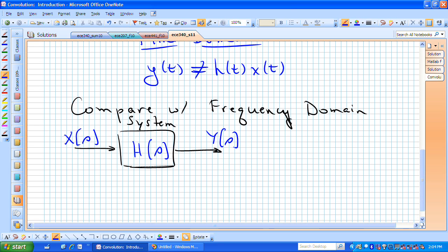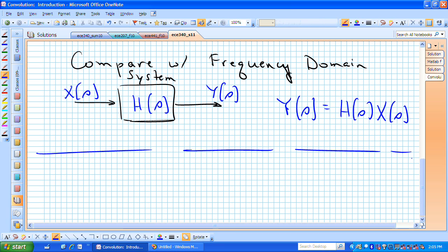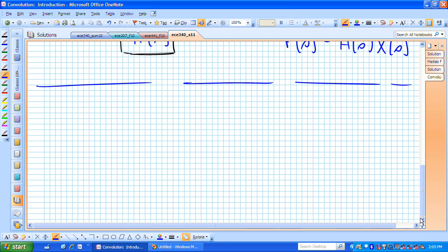The Laplace transformed input, which we're calling capital X of s, the transfer function of our system, which happens to be the Laplace transform of the impulse response, but the transfer function then is h of s. Our output is capital Y of s, which in the frequency domain is the product of h of s and x of s. And that's one of the reasons why everyone likes the frequency domain, is now we're simply playing with multiplication operations.